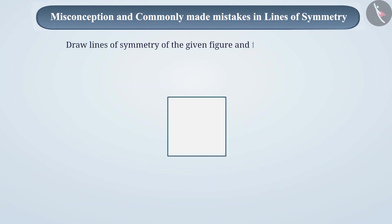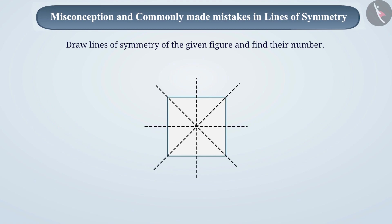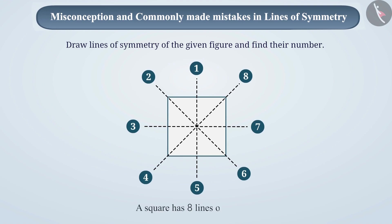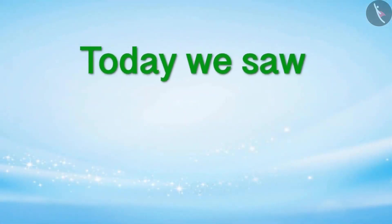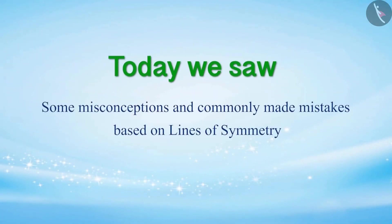If students are asked to draw lines of symmetry and find the number of such lines, some students draw the correct lines of symmetry, but when they count them, they make a mistake — by counting a line twice, the answer is wrong. Like, they say that a square has eight lines of symmetry, not realizing that they are counting a line twice. Therefore, while counting, remember that you need to count every line just once. So remember that a square has four lines of symmetry. Today, we saw some misconceptions and commonly made mistakes based on lines of symmetry.